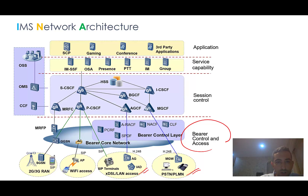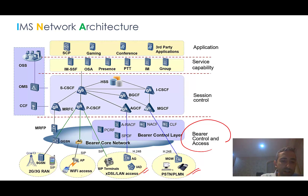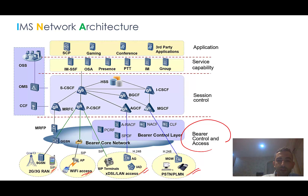Many networks can be connected to the IMS network: PSTN — Public Switched Telephone Network — PLMN — Public Land Mobile Network — various types of DSL, LAN, Wi-Fi access, and mobile networks including 2G, 3G, and 4G radio access networks. You can see the access layer here, which confirms that IMS is access independent.